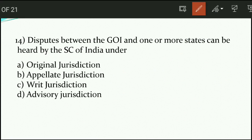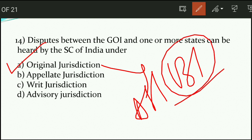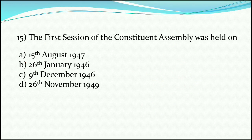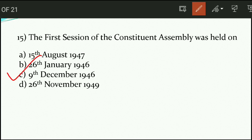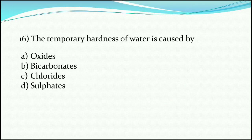Question number fourteen: disputes between the Government of India and one or more states can be heard by the Supreme Court of India under — the answer is option A, that is original jurisdiction, given under Article 131. Question number fifteen: the first session of the Constituent Assembly was held on — option C is the right answer — 9th December 1946, and it had 211 members.